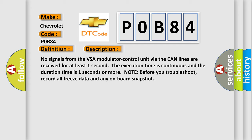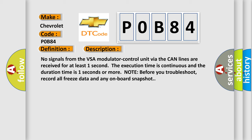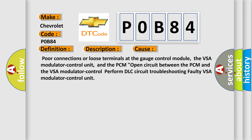This diagnostic error occurs most often in these cases: poor connections or loose terminals at the gauge control module, the VSA modulator control unit, and the PCM open circuit between the PCM and the VSA modulator control. Perform DLC circuit troubleshooting for faulty VSA modulator control unit.